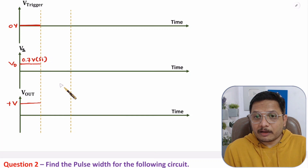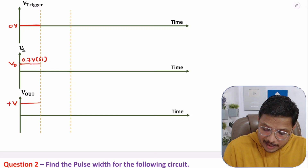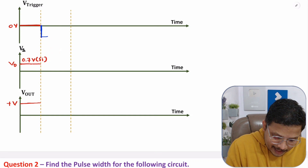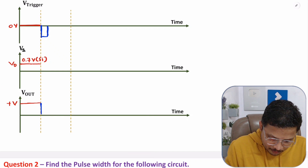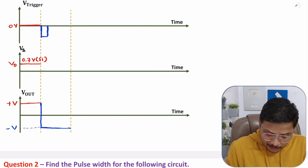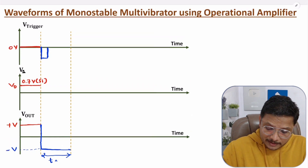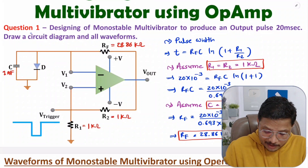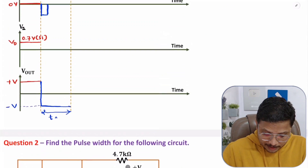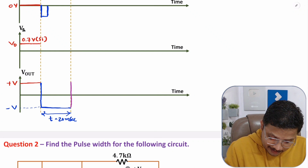The stable state changes only if we give a trigger. We apply a negative-going pulse as the trigger. By this negative-going pulse, the stable state changes from +V to −V. The width of this quasi-stable state is T, which is given to us as 20 milliseconds, and for that we have selected the component values. After the quasi-stable period T, the state automatically changes back from −V to +V.